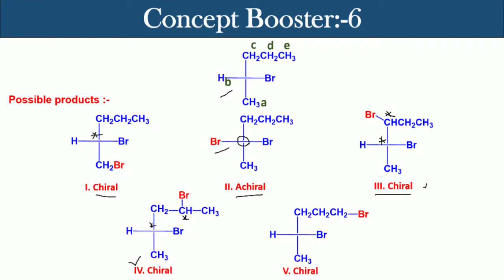It is also chiral because of this chiral center. Now, as we have to count the chiral products, then we can eliminate product two, right, as it is achiral. So now we have product one, product three, product four, and product five to count for the answer.